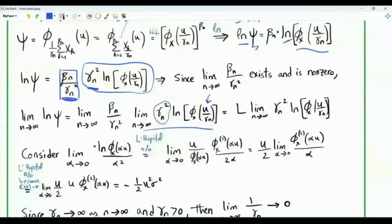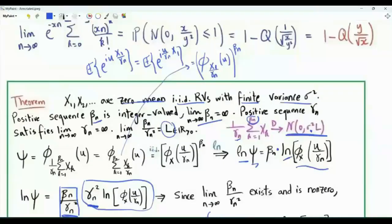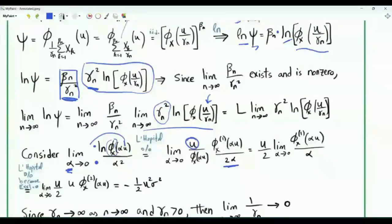L'Hôpital's rule requires differentiable functions in numerator and denominator. The denominator alpha squared is differentiable with first derivative 2 alpha. In the numerator, differentiating gives 1 over the characteristic function times the derivative of the characteristic function, with a factor of u from differentiating with respect to alpha. This is justified because our random variables have finite variance, which implies the characteristic function is twice differentiable. Evaluating at alpha tending to zero, the characteristic function tends to 1, but the first derivative of the characteristic function at 0 is i times the first moment. Since our random variables are zero mean, the numerator is also zero. We apply L'Hôpital's rule a second time.